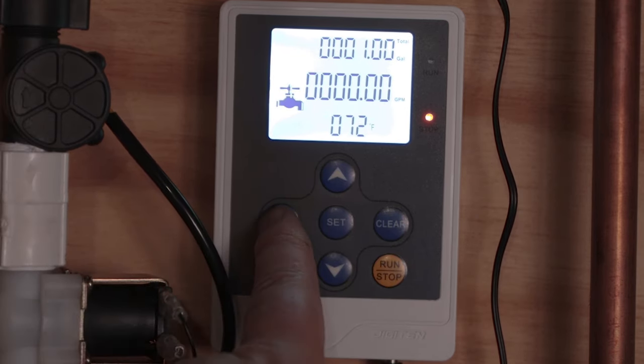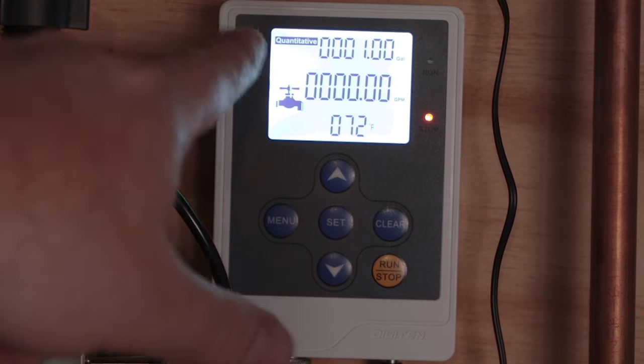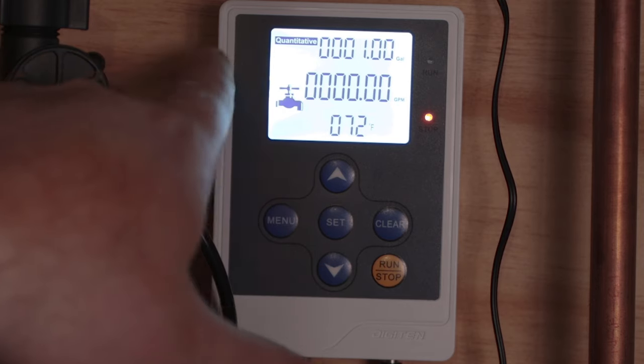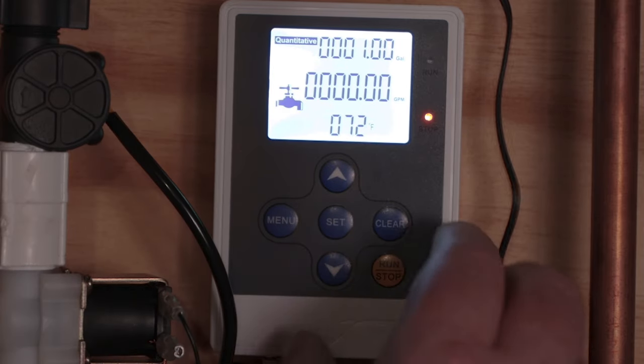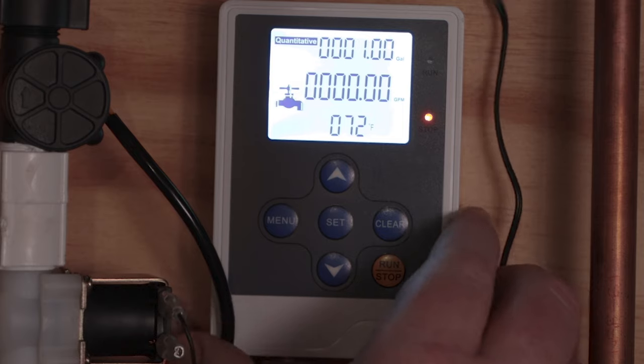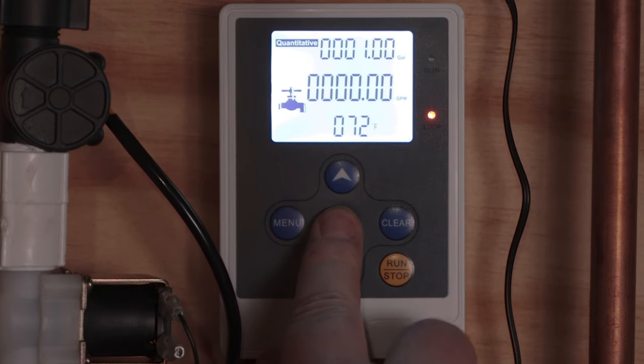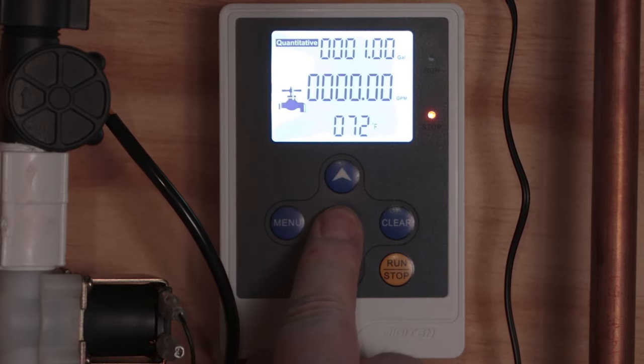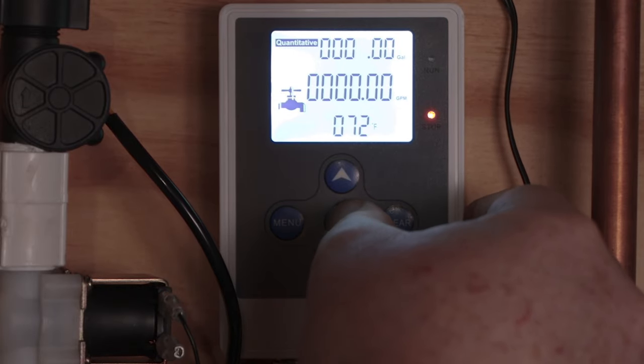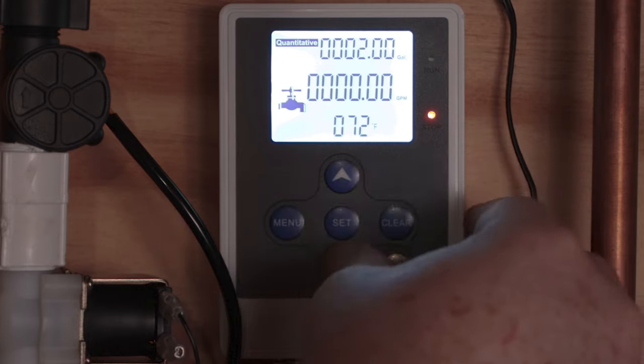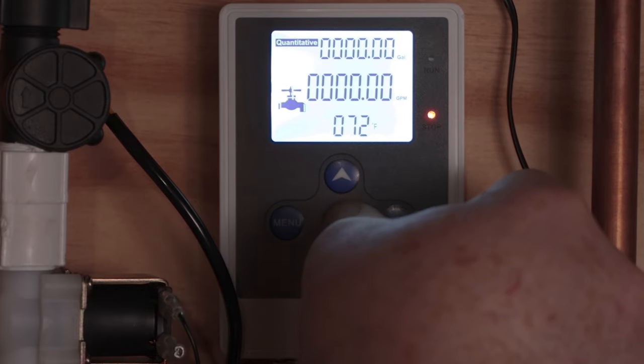So there's a few different options. The main one that I am interested in is this quantitative. So basically, whatever you set this figure right here to be, that is what the amount of water that the system will let flow through. So how you do that is you just press the set button, hold it down until you see the numbers start to flash. And then you can set your figures by using the up and down arrows. So right there is zero.